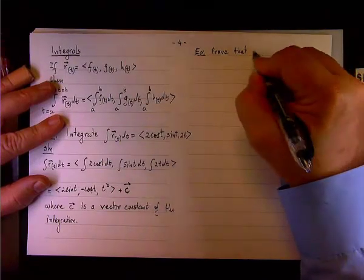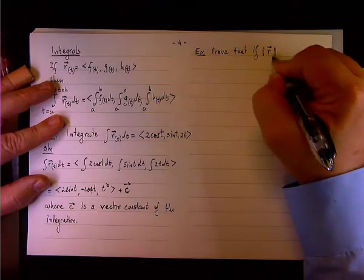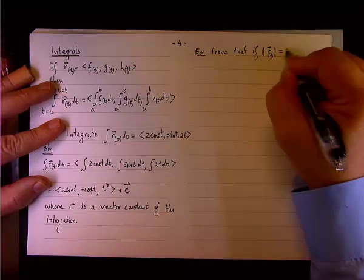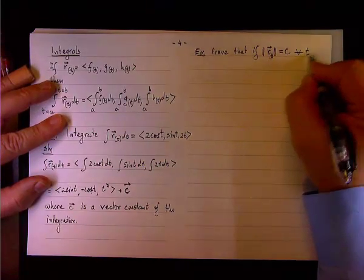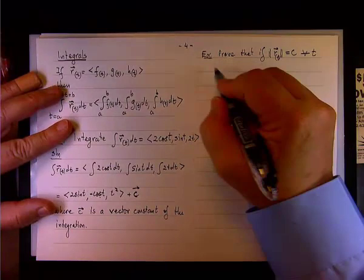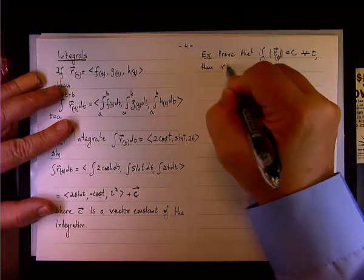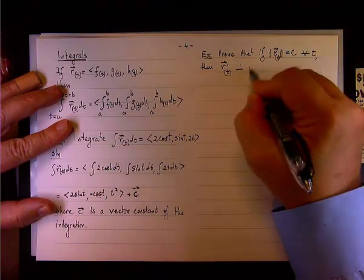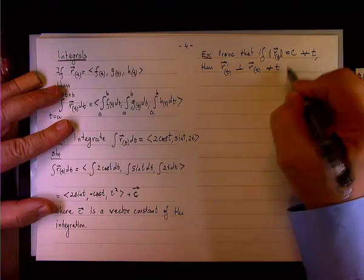Prove that if the magnitude of r(t) is a constant for all t (remember the symbol for all t), then r'(t) is orthogonal to r(t) for all t.